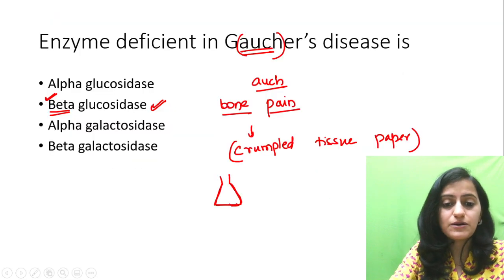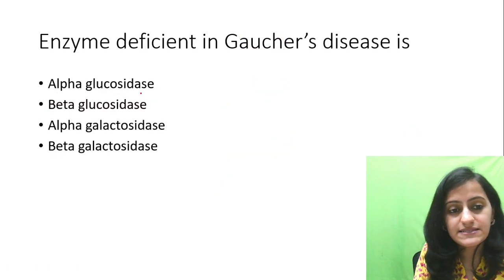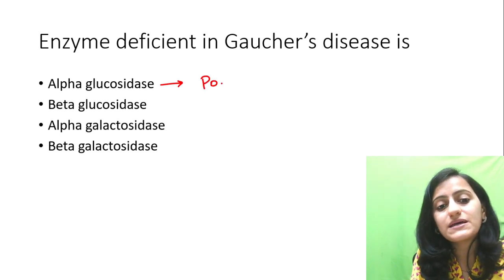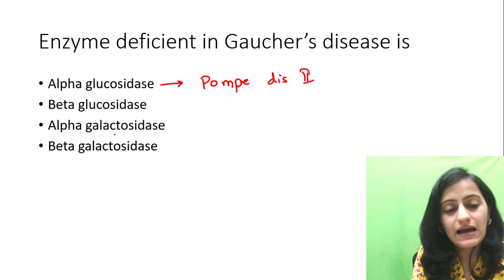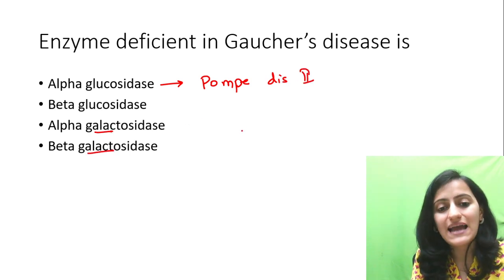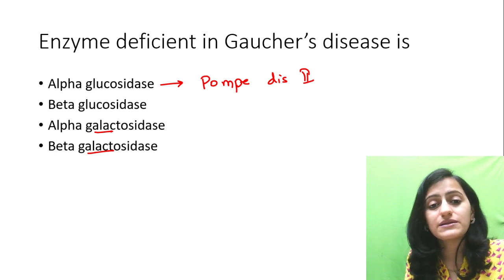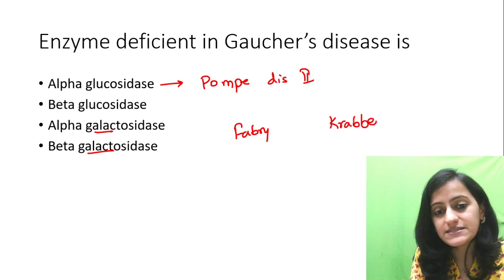So remember, that is about Gaucher's. Now let us see the other enzymes. Alpha-glucosidase is deficient in Pompe's disease, glycogen storage disorder type 2. Alpha-galactosidase and beta-galactosidase — one is deficient in Krabbe's disease and one is deficient in Fabry's disease. So which is which between Fabry's versus Krabbe's disease?